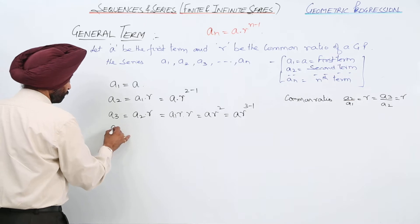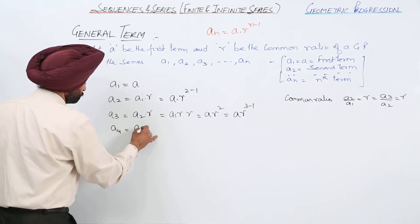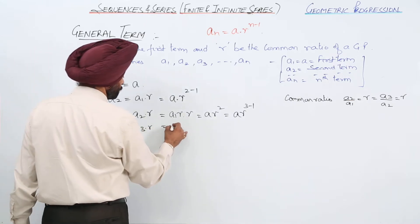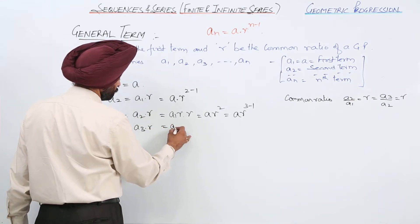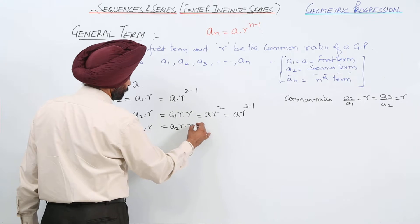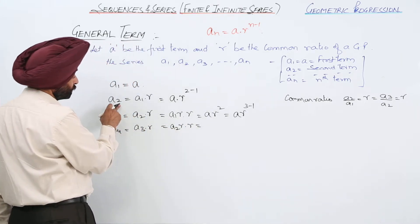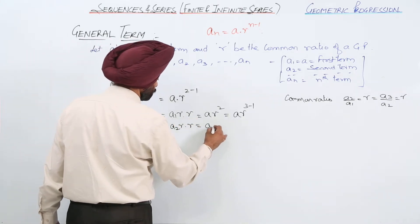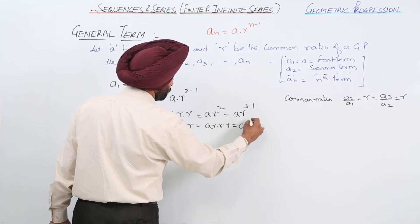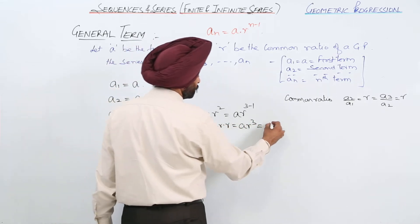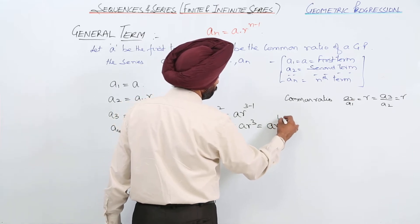Similarly A4, A3 times r. This equals now A3. A3 is what? A2 times r. A2 times r with r. A2 is A1 times r, so ar, so ar times r and r. Now this is ar cube, or we can write ar raised to 4 minus 1.